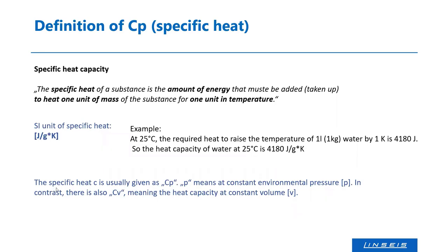Specific heat is very often given as CP. The P means it's measured at constant environmental pressure. In contrast, there's also the specific heat capacity at constant volume, named Cv, where pressure changes but volume is kept constant. In thermal analysis we always speak about CP, since we work in systems with constant pressure.